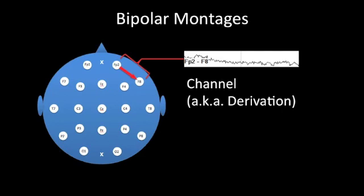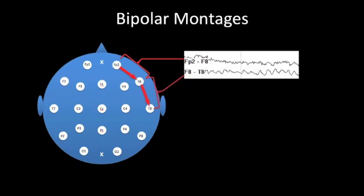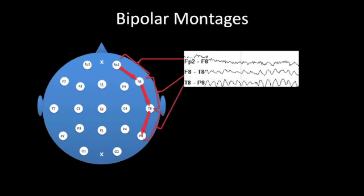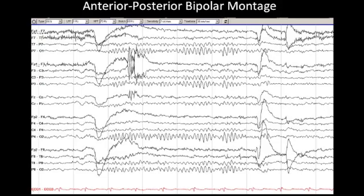We then continue posteriorly, starting at F8 and going to T8, generating another channel or derivation. We continue posteriorly to generate a chain of electrodes along the temporal aspect of the head. Eventually, we put a number of these chains together to generate a montage. This is an example of an anterior-posterior bipolar montage.